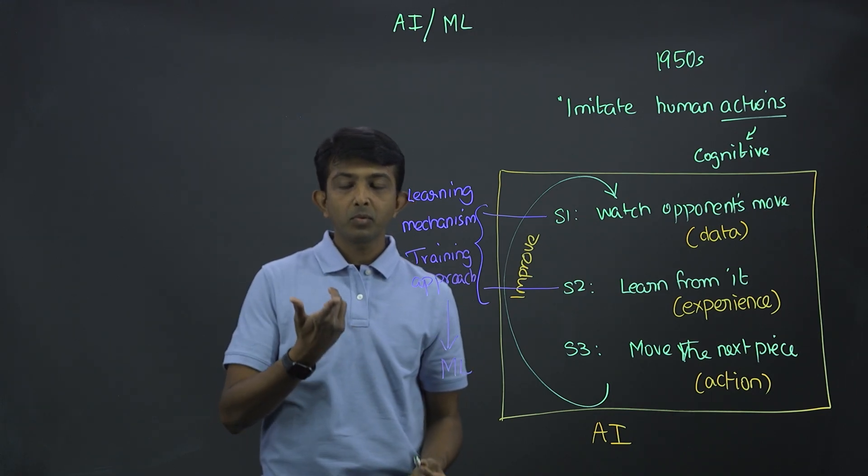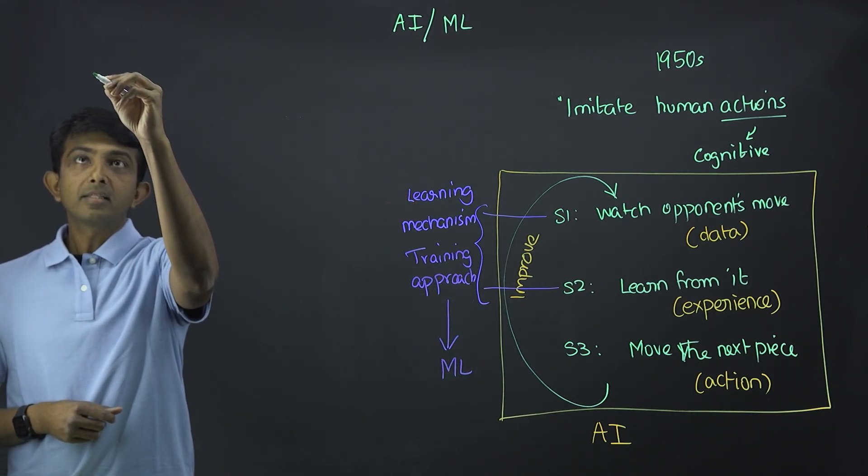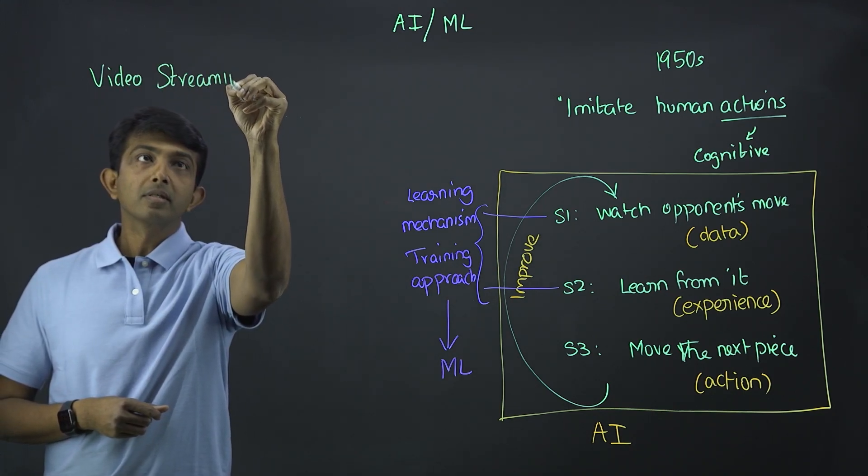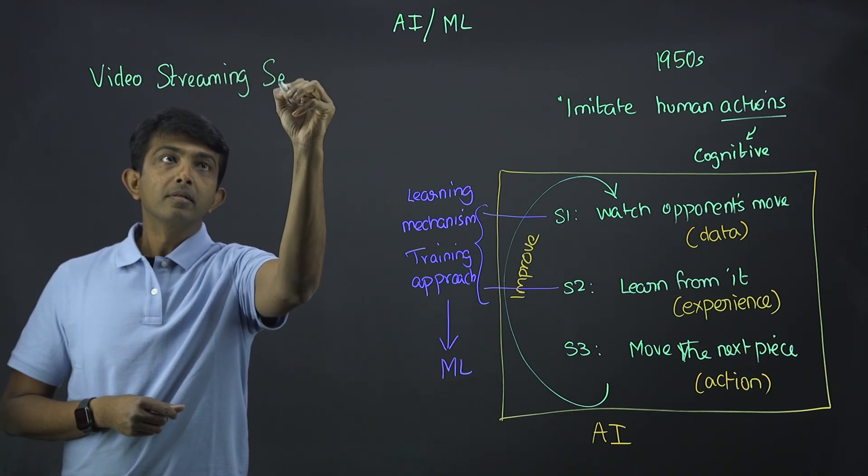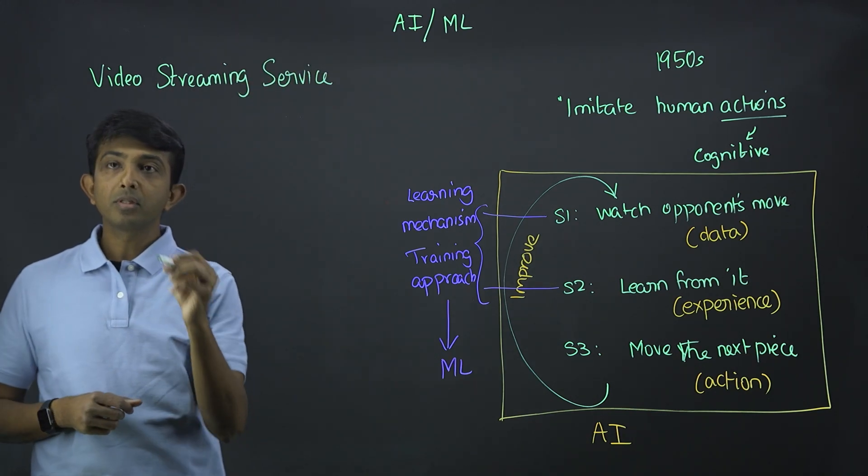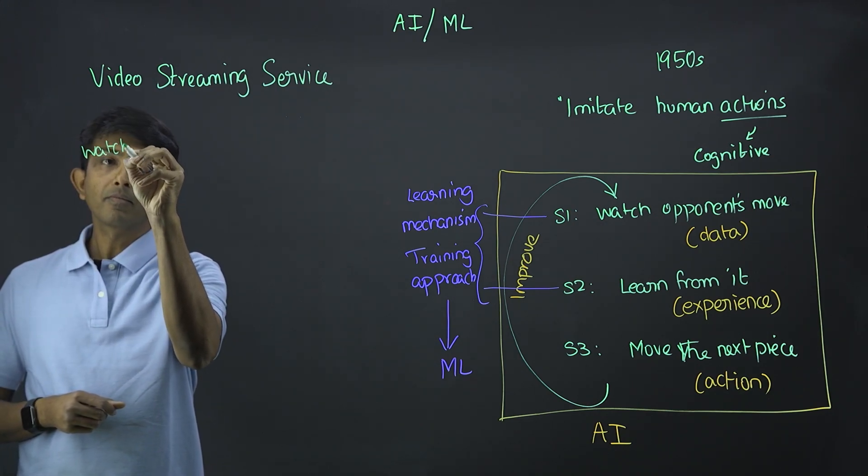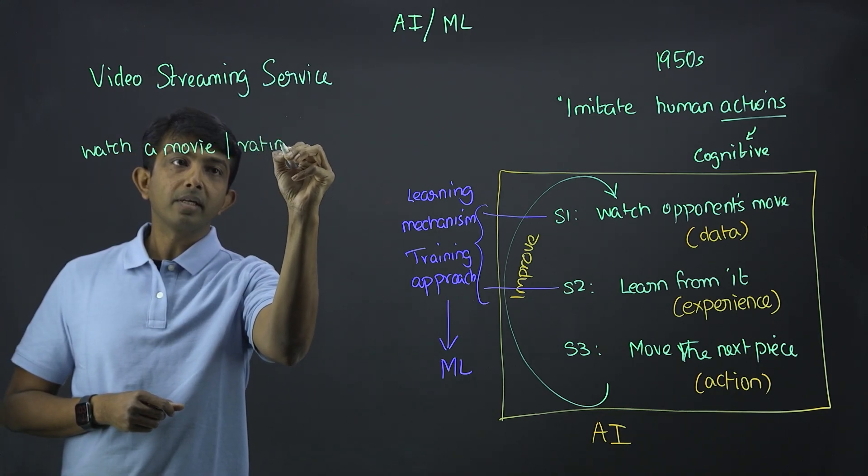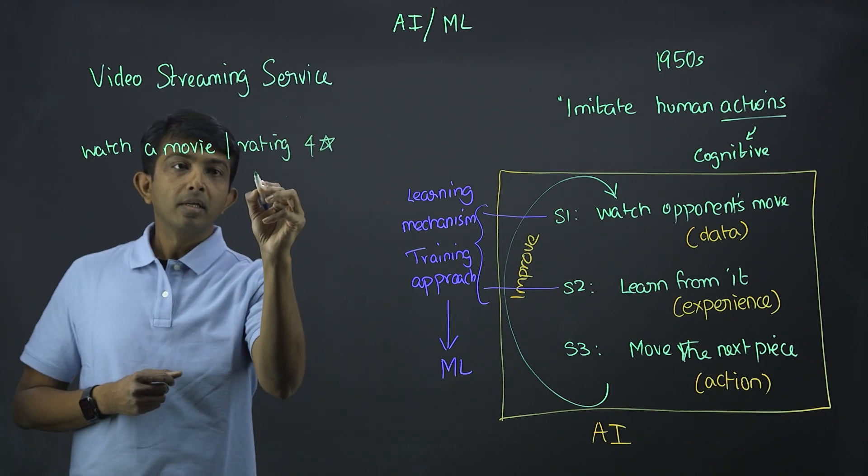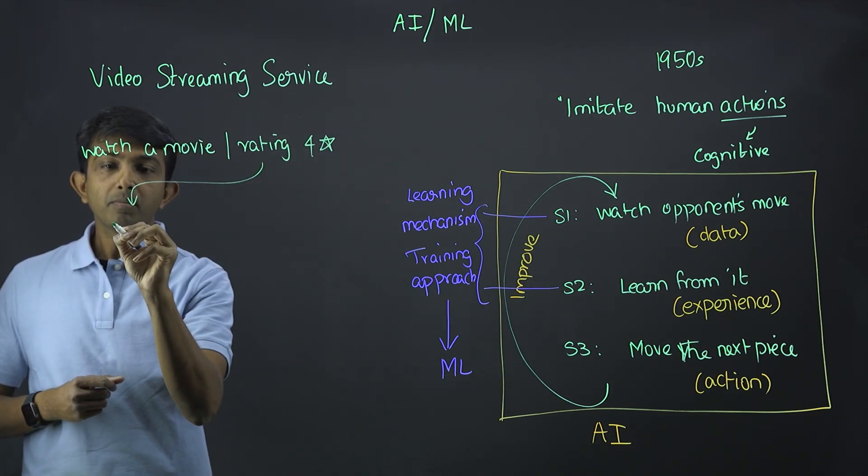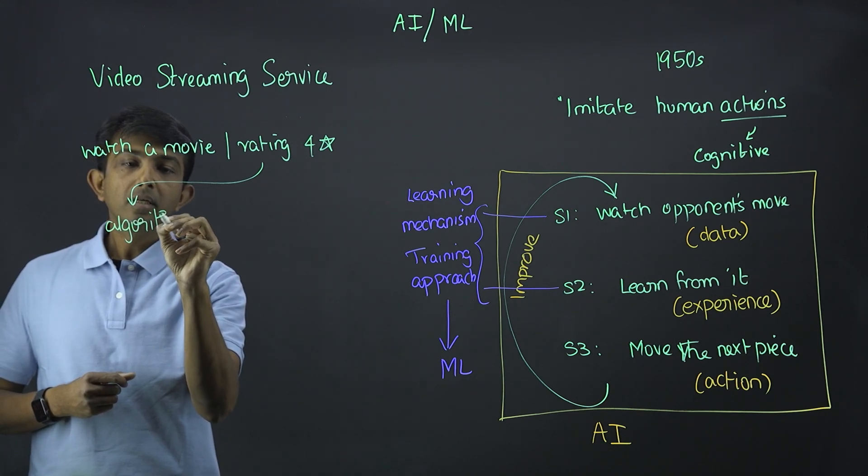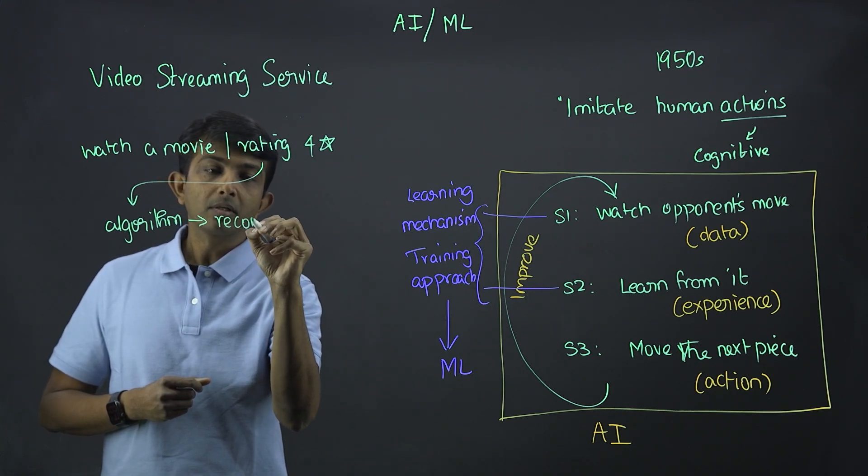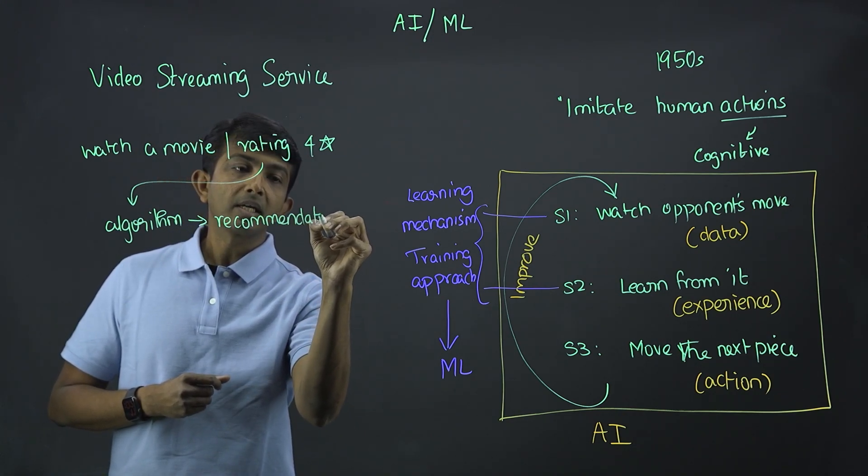Now, let me walk through a more modern example. Let's say, by this time, probably all of us have a video streaming service. So what do you do with this service? You watch a movie, and say you give a rating of four stars. Now, the algorithm behind this video streaming service is going to watch this data and provide a recommendation of a similar movie that could satisfy your taste.